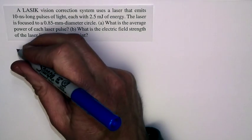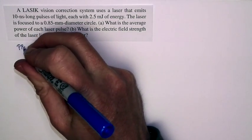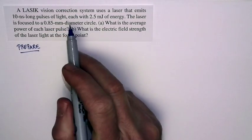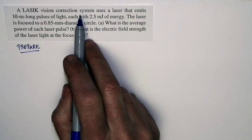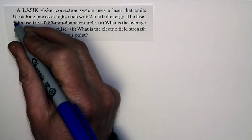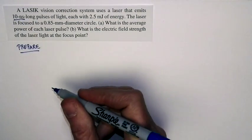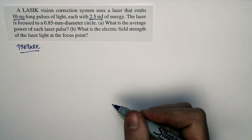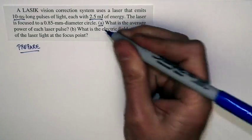Okay, let's prepare to solve this problem. We're told that a LASIK vision correction system uses a laser that emits 10 nanosecond pulses of light, each containing 2.5 millijoules of energy. Now actually, let's jump to part A.